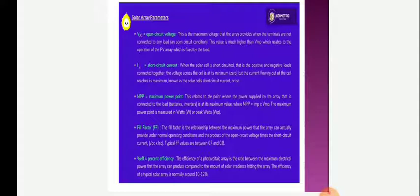ISC, short circuit current: When the solar cell is short circuited, that is the positive and negative leads connected together, the voltage across the cell is at its minimum zero. But the current flowing out of the cell reaches the maximum known as the solar cell short circuit current ISC.